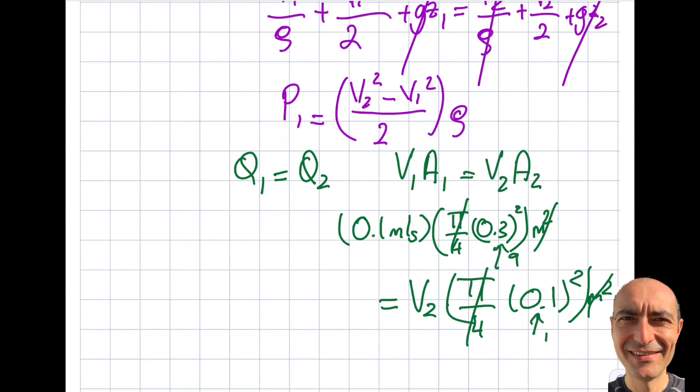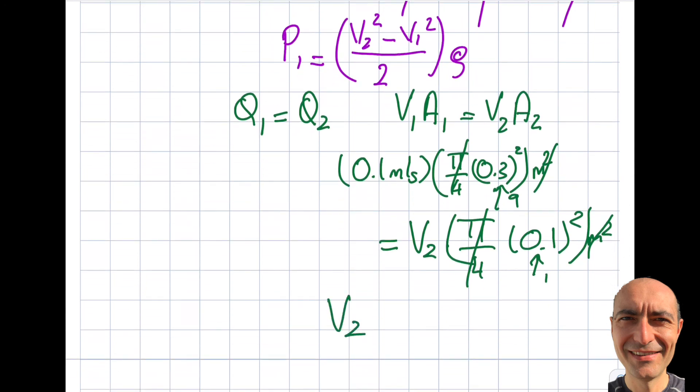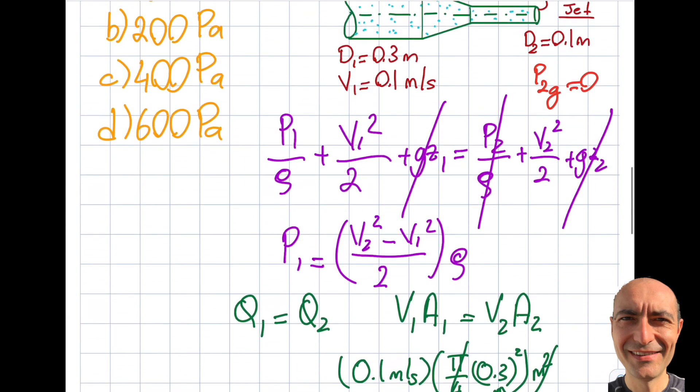From here I get V2 as 0.9 meters per second. I accomplished something, I'm happy. Once I accomplished this, I'll go back and insert it here.